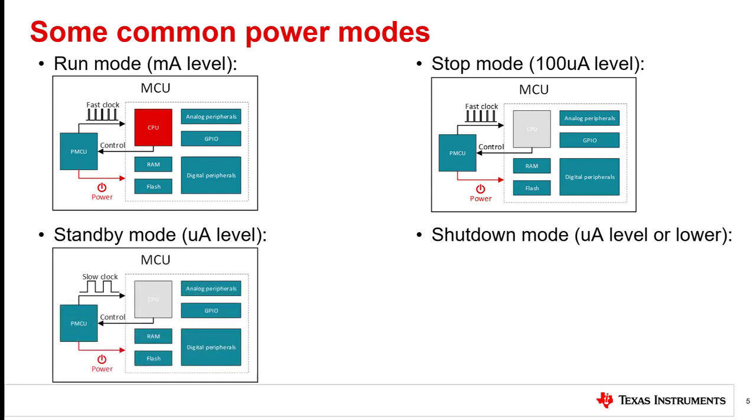In standby mode, the CPU is still disabled, but we reduce the clock frequency compared to stop mode. In standby, the high frequency clock shuts down and only a low frequency clock is available. For some MCUs, certain peripherals will also be disabled. The current in standby mode would be down to a single microamp level.